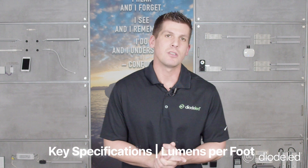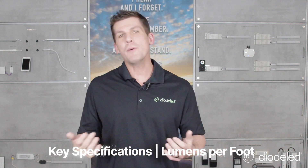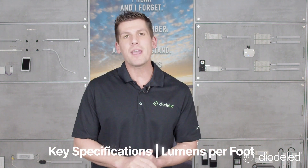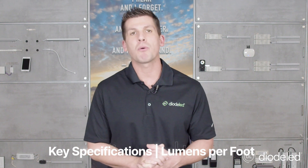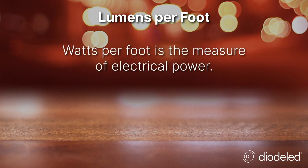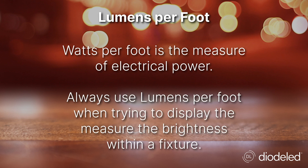Key specifications. One of the most important is lumens per foot — the brightness of an LED measured per foot. Remember though, your customers might be thinking watts per foot when they mean lumens per foot. Watts per foot is the measure of electrical power, but nowadays we always use lumens per foot when trying to display the measure of brightness within a fixture.